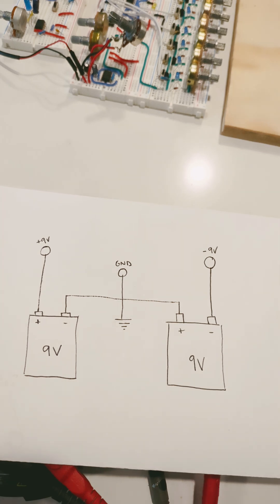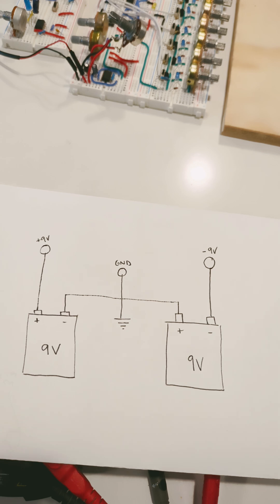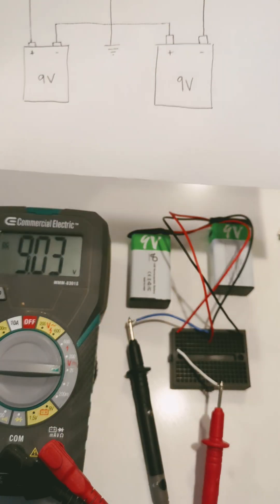So positive 9 volts, negative to positive on the other battery, and then negative 9 volts on the other side.